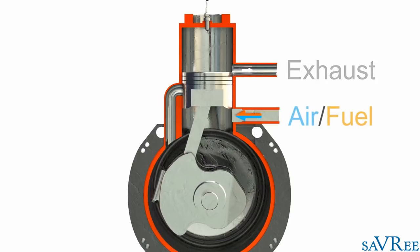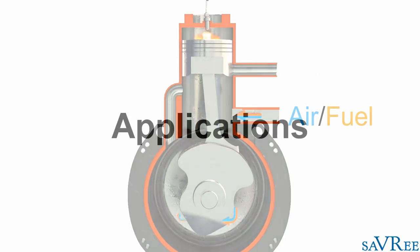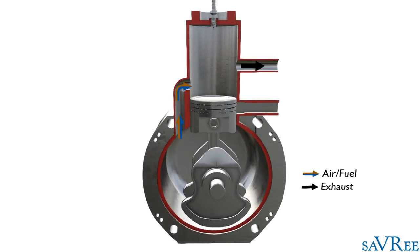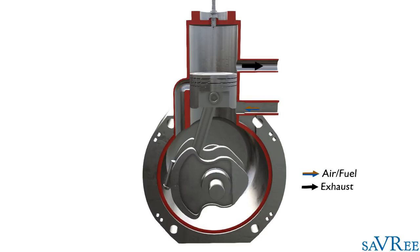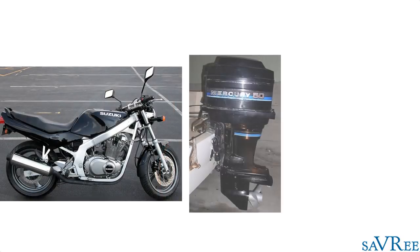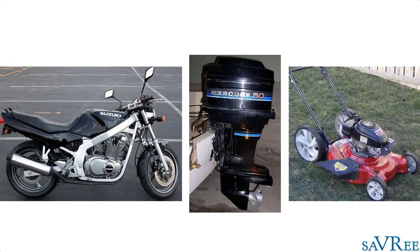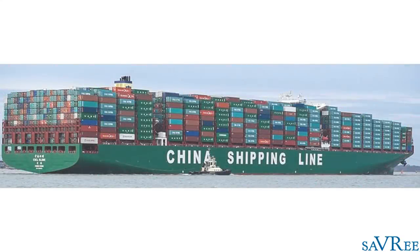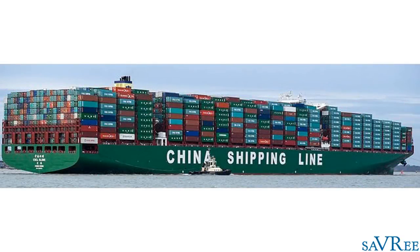So let's have a look at some of the applications of this type of engine. Two-stroke engines are generally used only for small applications — things like motorbikes, an outboard engine for a motorboat, or perhaps a lawnmower. There is one exception: you will see this type of engine used for very large merchant navy vessels — ships, container ships, oil tankers — all these huge ships will use two-stroke engines.